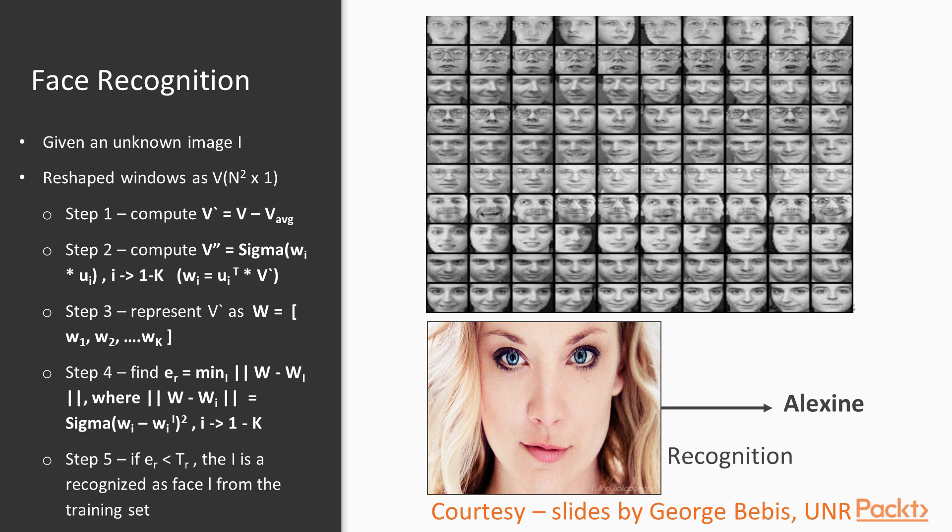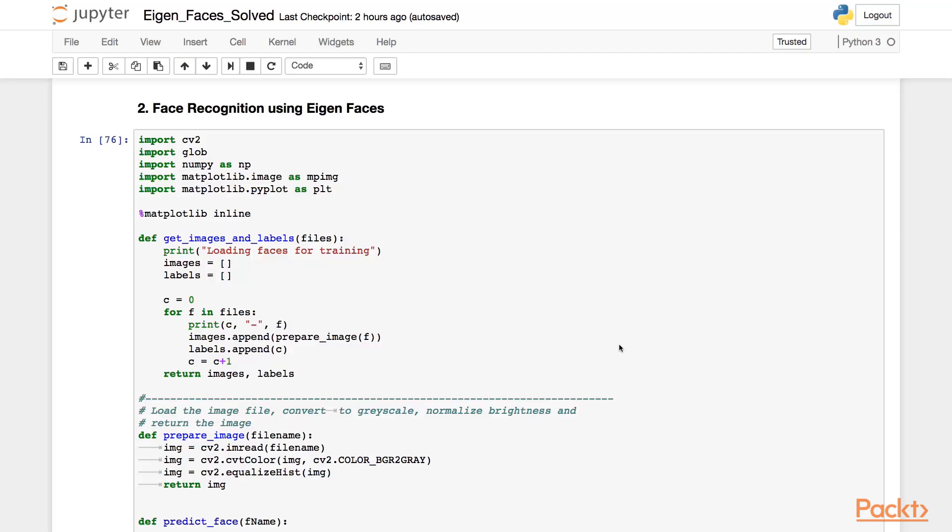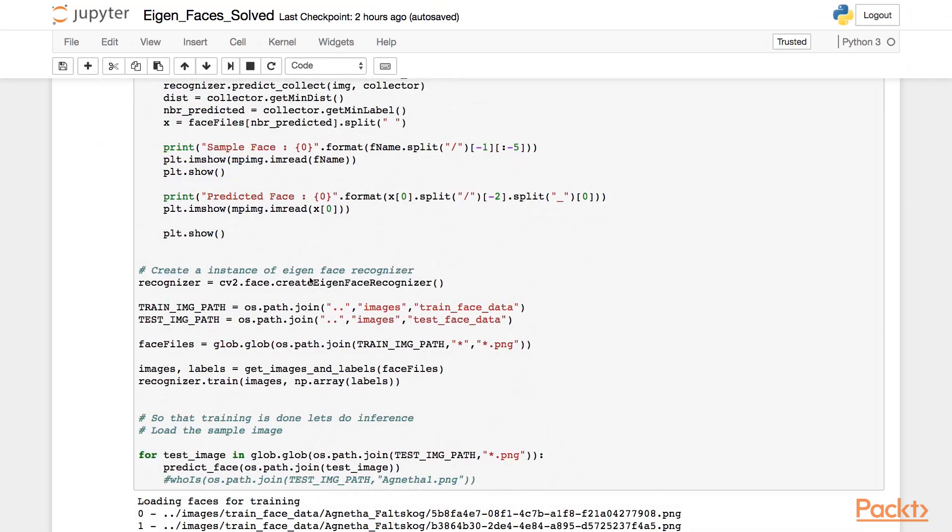Let's see an example for detecting a face in Python notebook. We'll create an instance of eigenface recognizer by calling the method create eigenface recognizer of the face module, which is part of the OpenCV contrib. Then we declare the training image path and the test image path, and we call the function get images and labels and pass the training faces. This function returns us the images along with their corresponding labels.